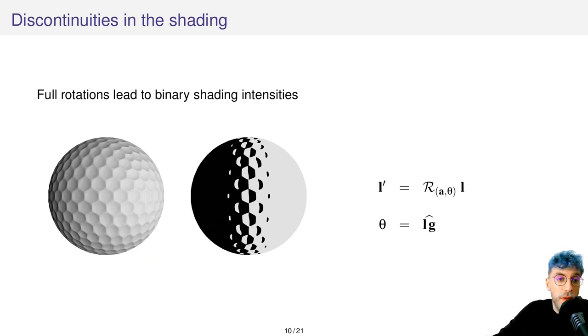Of course, if we align the light with either the normal or the tangent, we will end up with binary shaded images like so. It introduces a lot of discontinuities in the shading that we need to solve.